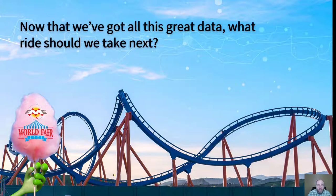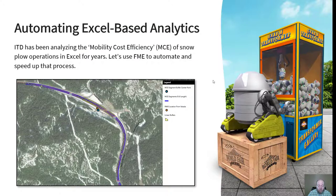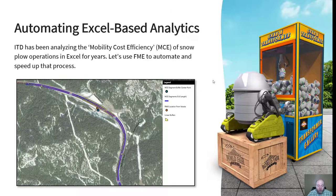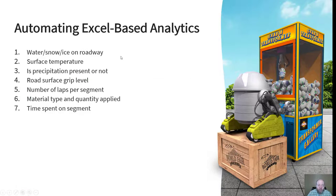Going back to the ping table with all that rich data — what should we do with it? Under a different project that ESRI is supporting ITD with, one of their first applications was to automate an existing Excel-based analytics tool: a Mobility Cost Efficiency algorithm, the MCE. For years, a gentleman at ITD named Dennis Jensen had been manually computing MCE scores for storm events inside Excel, which was pretty painstaking — requiring queries of multiple reports to gather data and plug it into a spreadsheet. This was something we wanted to automate.